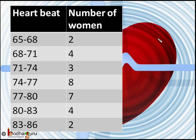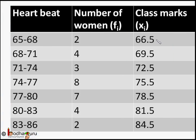The first thing we do when finding the mean of grouped data is finding the class mark, because no matter which method you follow, class marks will be needed. Class mark is equal to (upper limit + lower limit) / 2. So for the first row, (65 + 68) / 2 = 66.5. For the second row, (68 + 71) / 2 = 69.5, and so on.